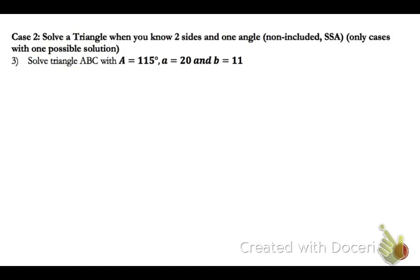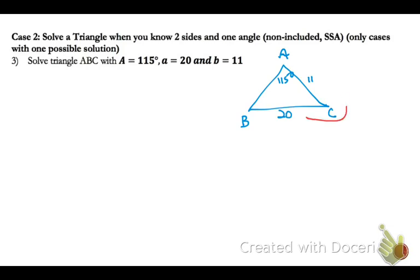Now we've got case 2 — when we know two sides and one angle that is not included. Drawing this triangle with vertices A, B, and C: angle A is 115 degrees, side A is 20 (across from that angle), and side B is 11. Looking consecutively, we know side, side, and angle — this is side-side-angle — but that is still enough information to use the law of sines.